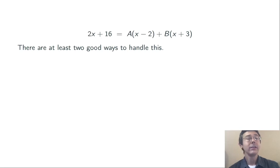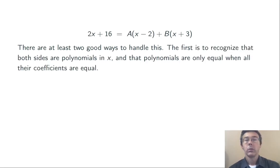There are at least two ways that we can solve this. First of all, we can recognize that both sides are polynomials in x, and polynomials can only be equal if the coefficients of all the different powers of x are the same. So here the constant terms have to match up, and the x terms have to match up. If there were x squared terms, those would have to be equal on the left and right. Same thing with x cubed, and so on.